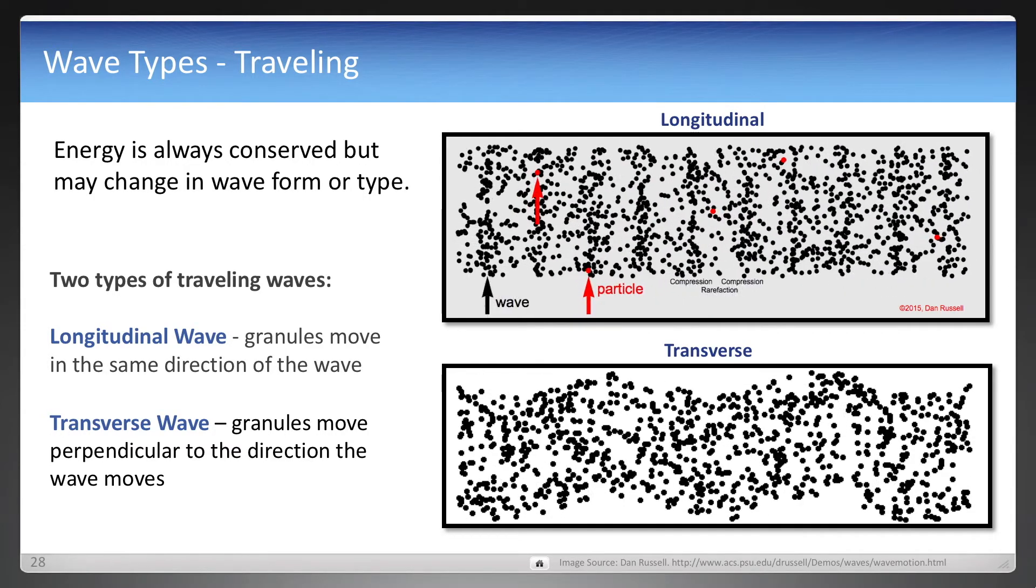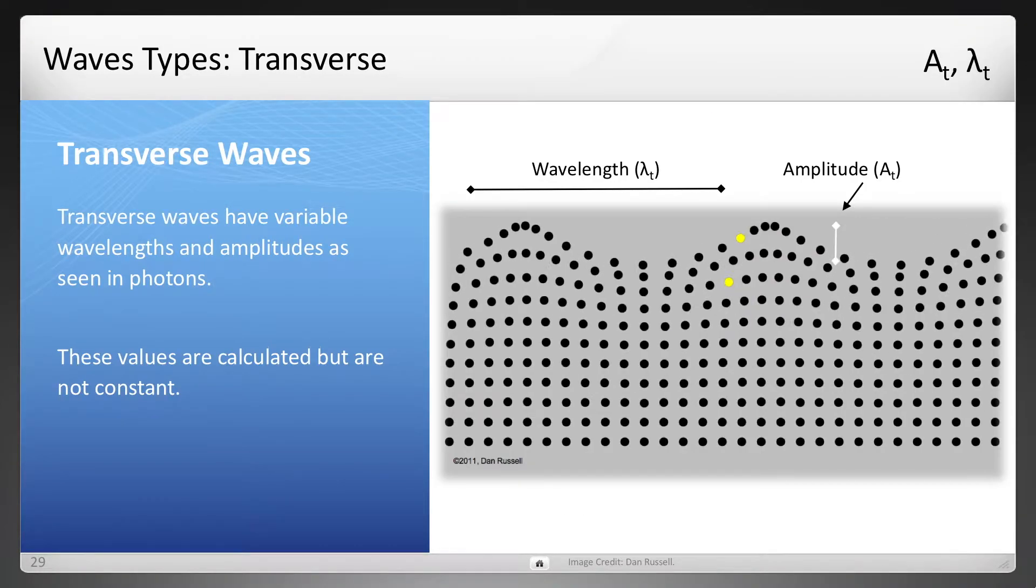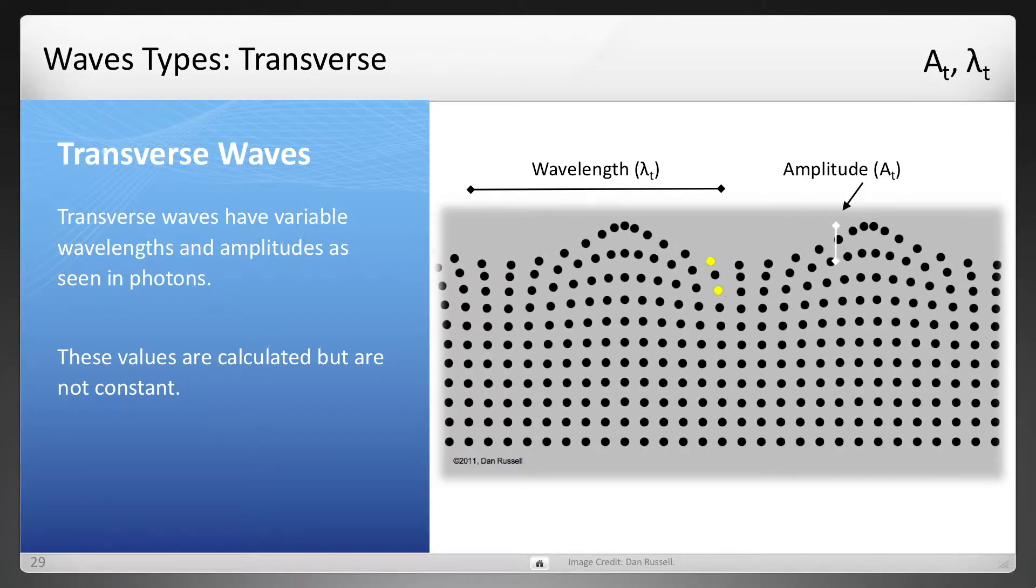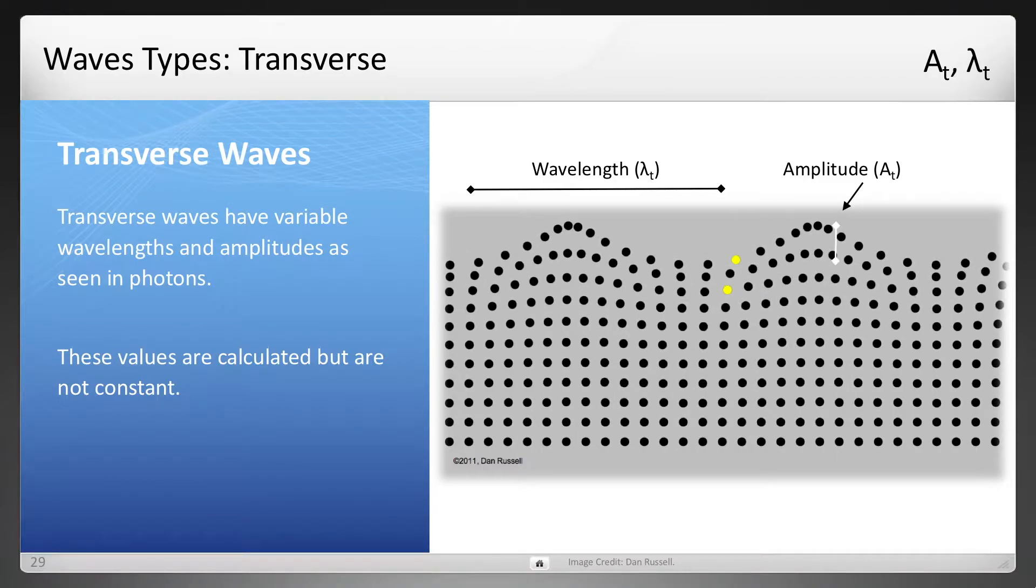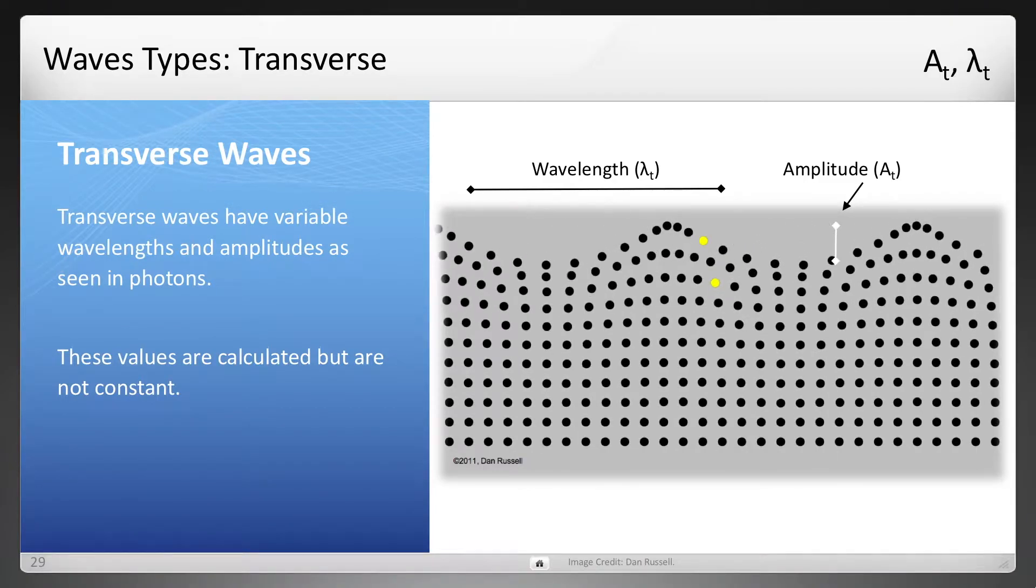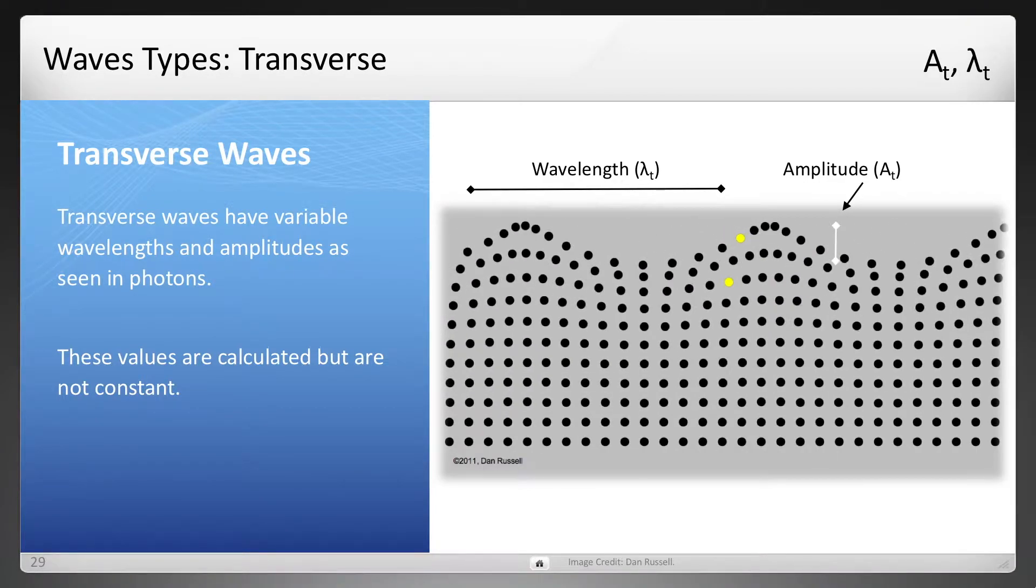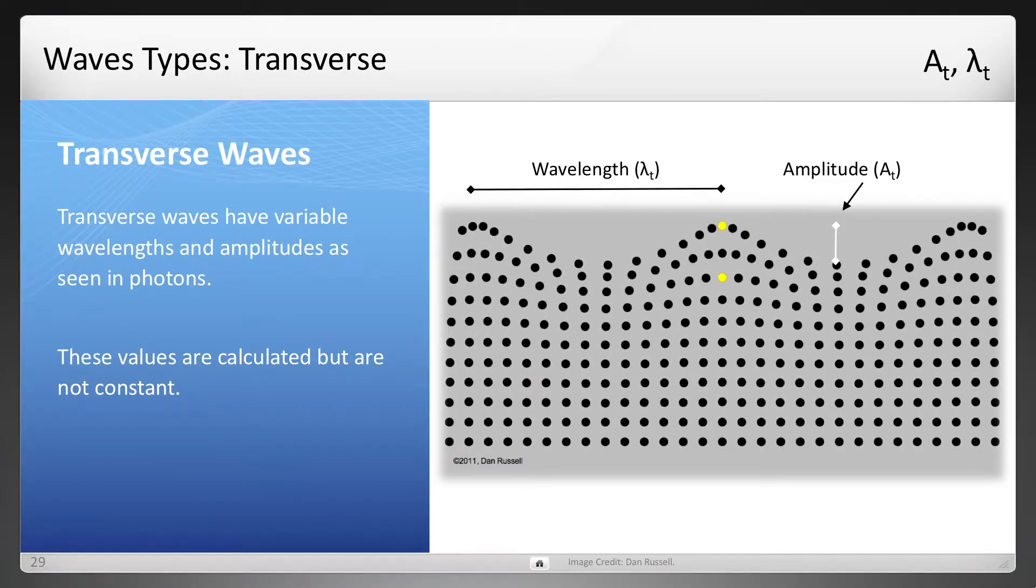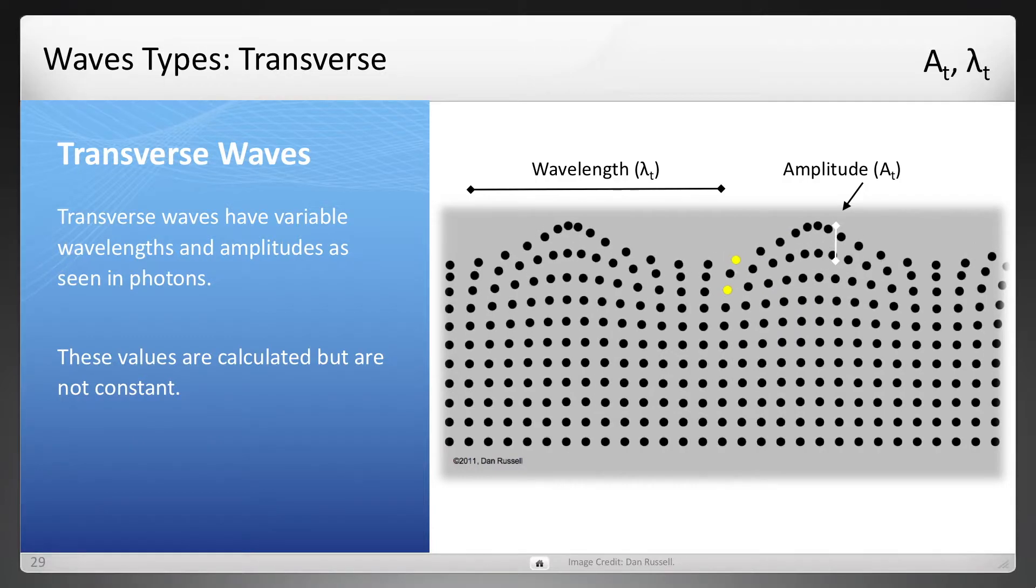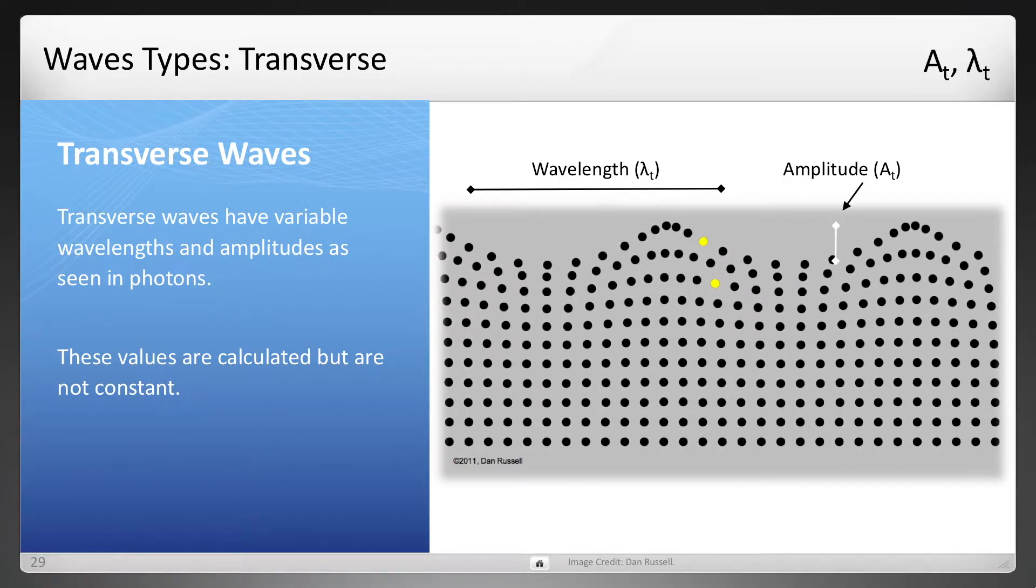These two wave types are going to be important to remember. And for transverse waves, we covered longitudinal wavelength and amplitude earlier. The transverse wavelength will be variable, so a little amplitude. And so it was given a subnotation here of t to distinguish the difference. And these are going to be variables, and we're going to see that in photons.